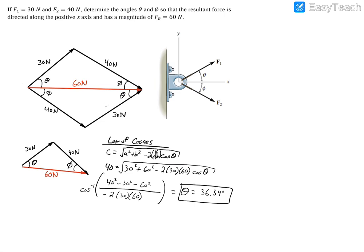Now I encourage you to try the next step, but like I said, when we were looking for angle theta, we set c equal to 40 newtons. So now when we're looking for angle phi, we would want to set c equal to 30 newtons.